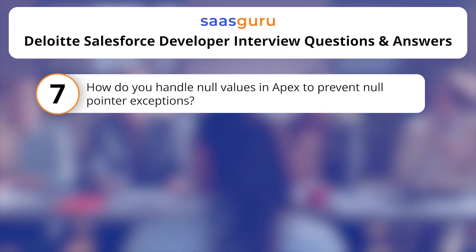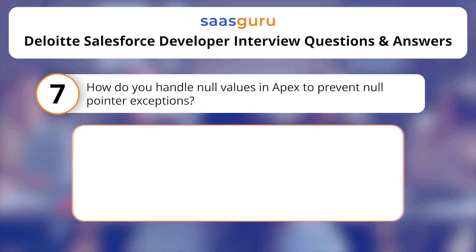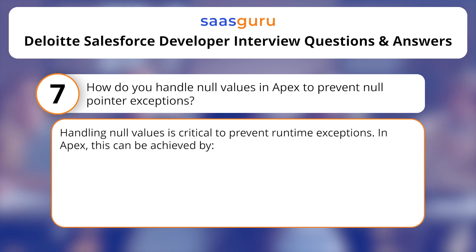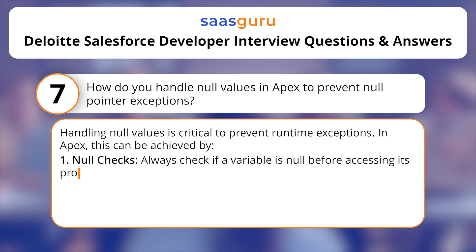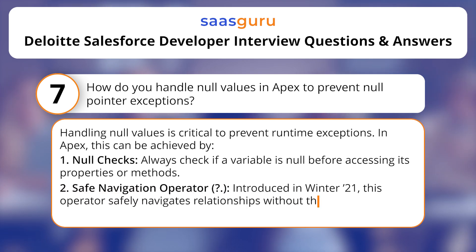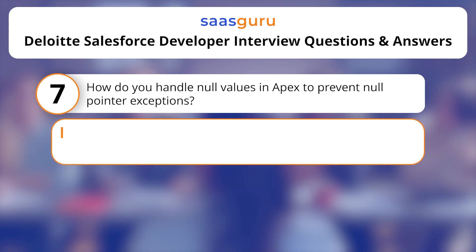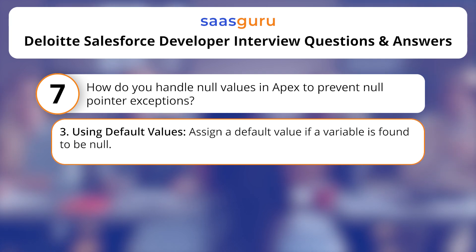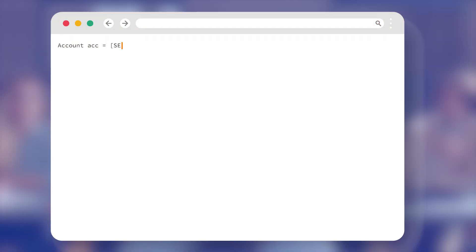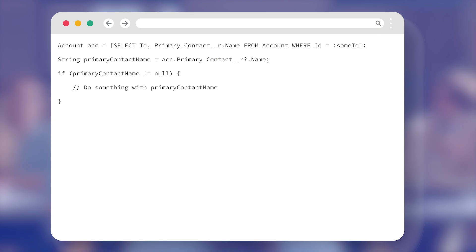How do you handle null values in APEX to prevent null pointer exceptions? Handling null values is critical to prevent runtime exceptions. In APEX, this can be achieved by: null checks — always check if a variable is null before accessing its properties or methods; safe navigation operator — introduced in Winter '21, this operator safely navigates relationships without throwing a null pointer exception; and using default values — assign a default value if a variable is found to be null. By implementing these practices, you can write robust APEX code that gracefully handles null values.